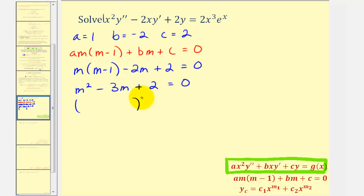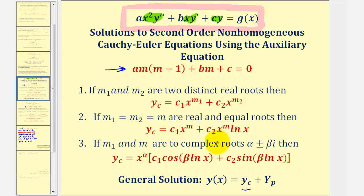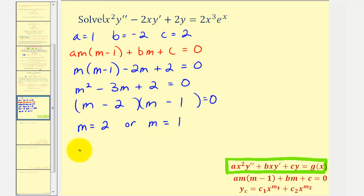We can solve this by factoring. The factors of positive two that add to negative three are negative two and negative one, so we have m equals positive two, or m equals positive one. Because the auxiliary equation has two distinct real roots, the form of the complementary function will be in this form here. If we had two real equal roots, this would be the form; and if our auxiliary equation had complex roots, this would be the form of the complementary function.